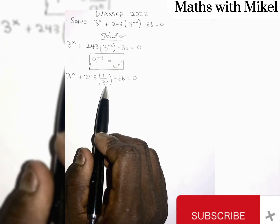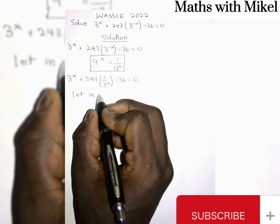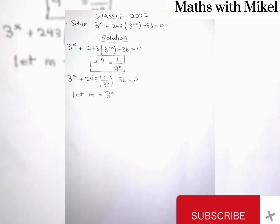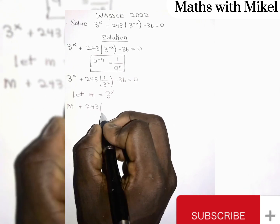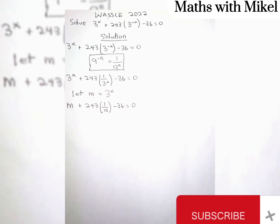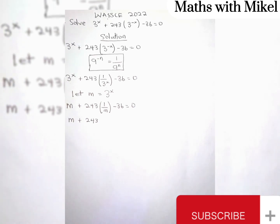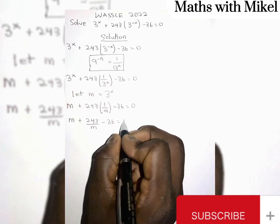Realize that we have 3 exponent s and 3 exponent s, so we can equate any variable to 3 exponent s. Let m be equal to 3 exponent s. This means wherever we see 3 exponent s in our equation, we will replace it with m. So we get m plus 243 multiplied by 1 over m minus 36 is equal to 0. m plus 243 times 1 over m is the same as 243 over m, minus 36 equals 0.